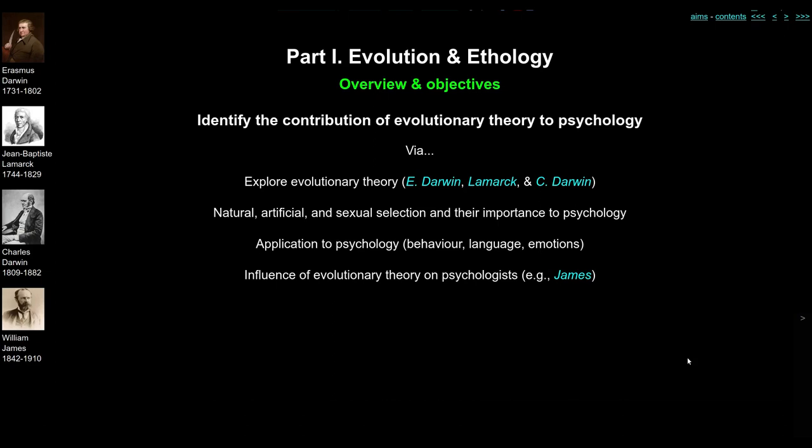We'll look at evolutionary theories of Darwin and Lamarck, look at natural and artificial selection, maybe sexual selection, and see how they may be important to psychology. We'll look at the more direct application of evolutionary theory to psychology in areas like behaviour, language, and emotions, and see how some psychologists have been influenced by evolutionary theory.